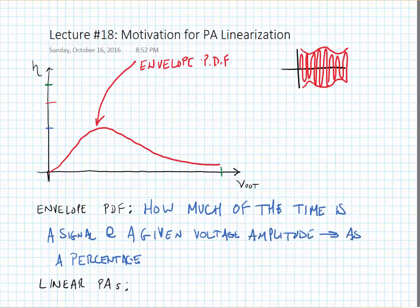If we look at the efficiency of an amplifier as a function of the output voltage, it looks something like this. Class B amplifiers have an efficiency that is linearly proportional to the output voltage. It peaks at the maximum output voltage and has a peak value of 78.5%.